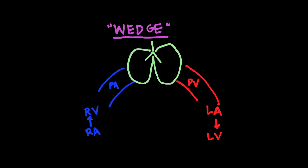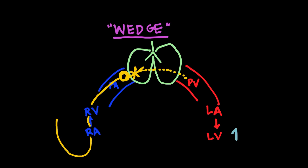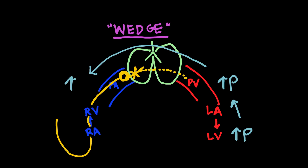Another name for the wedge is the pulmonary artery occlusion pressure. You get your catheter into position in the pulmonary artery and then blow up the balloon on the end of the catheter, which essentially occludes the pulmonary artery for a short amount of time. When you do that, the pressure you're measuring is actually coming from the left side of the heart — so this is a way to measure an estimated pressure on the left side of the heart.